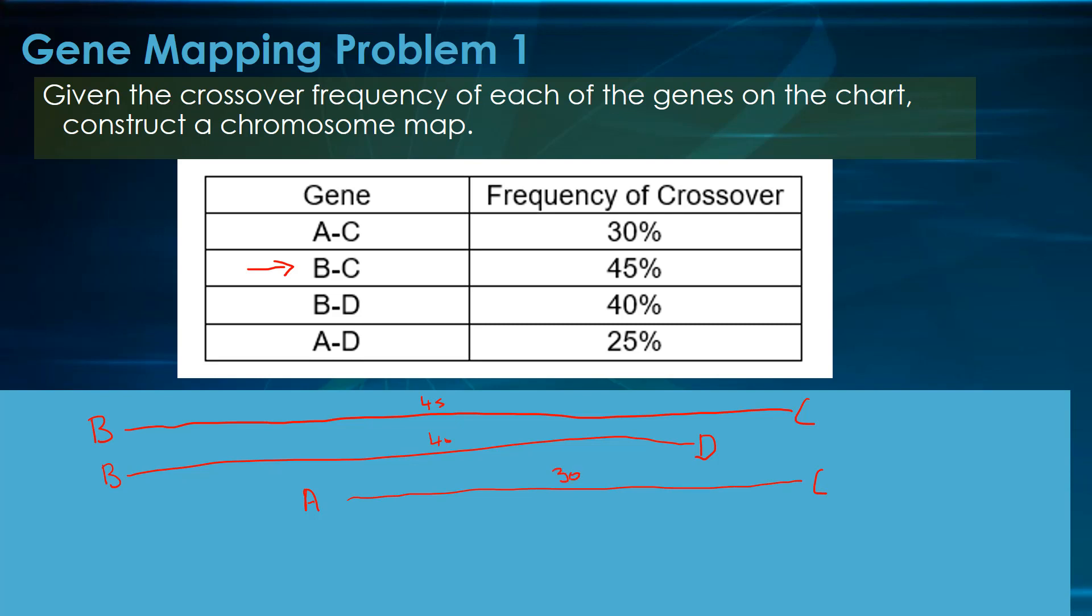And lastly, A to D is 25. So between here and right there is 25.